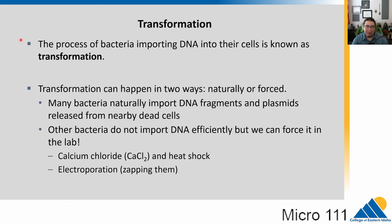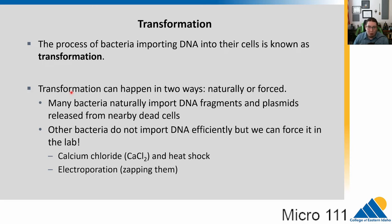One of the easiest and most interesting mechanisms, because you can quite easily do it in the lab, is transformation — the process of bacteria importing DNA into their cells. There is free DNA floating around in the environment that bacteria can pull into their cells. This happens naturally; many bacteria will just take DNA from their environment, released by dead cells or bits of plasmids, pull it in, and start making those genes, which might give them an advantage.